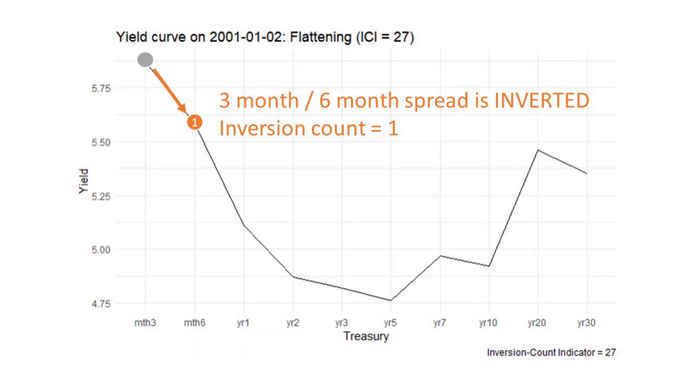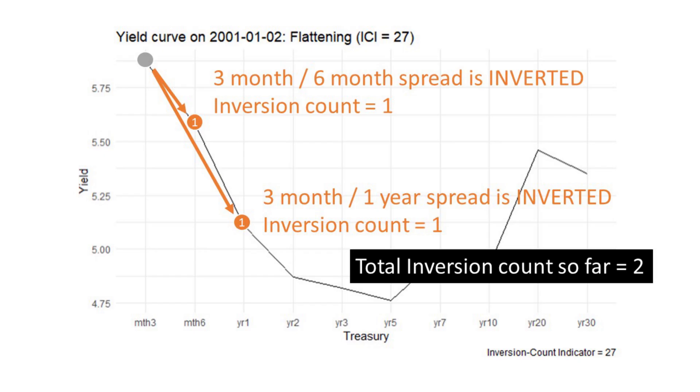Let me explain how this works. Let's start with the 3-month view and check all the spreads that are measured against it. For example, the 3-month and the 6-month spread — is it inverted? If it is, we will give a score of 1. That's 1 inversion count. Next we check the 3-month 1-year spread. Is it inverted? If it is, we give that another score of 1. We do this for every spread measured against the 3-month yield.